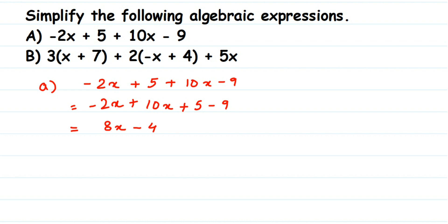So we get 8x minus 4. We cannot simplify this further because they are unlike terms — 8x has a variable and 4 is a constant. So this is the final answer: 8x minus 4. Now let's move on to the second question.